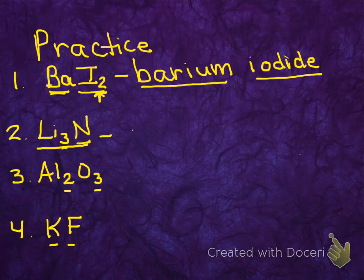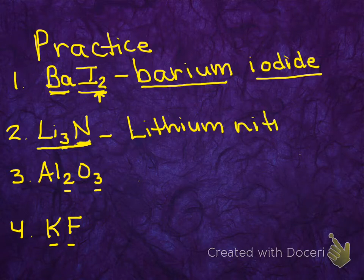Let's look at example two, Li3N. The metal in this case, or the first element, the cation, is Li, lithium. The second element in this compound is N, which we should know is nitrogen. But we're not going to write it as nitrogen, we're going to write the -ide ending, so the compound name is going to be lithium nitride.